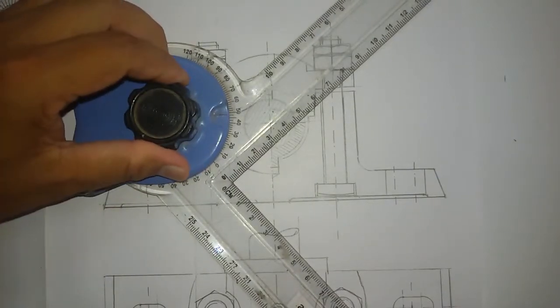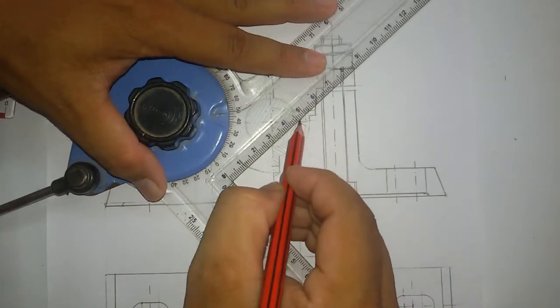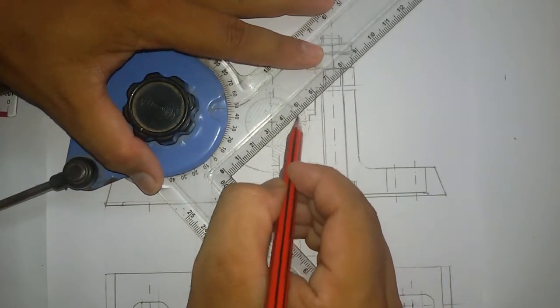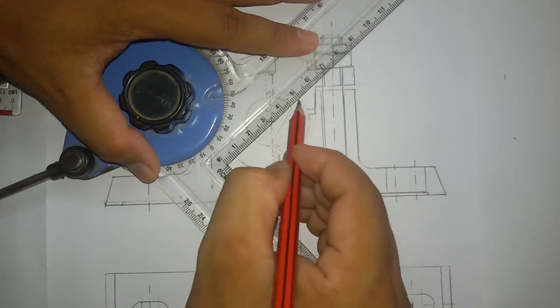Then tilt your drafter to some 50 degrees and hatch the top portion of bush.